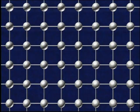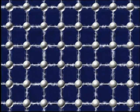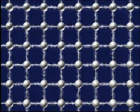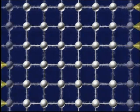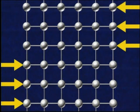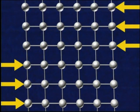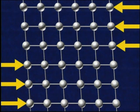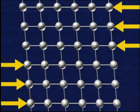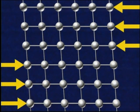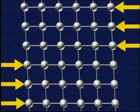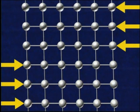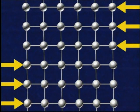All atoms in these crystalline structures are held in place by electromagnetic attraction to neighboring atoms. If a force, or load, is applied to a metal, these electromagnetic bonds stretch, allowing the atoms to move slightly. When the load is removed, the bonds pull the atoms back into position.